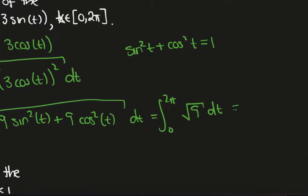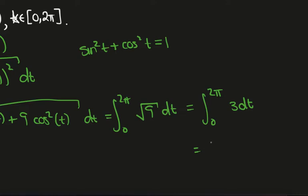And square root of 9 is 3, so I have the integral from 0 to 2π of 3 dt, which is just 6π.